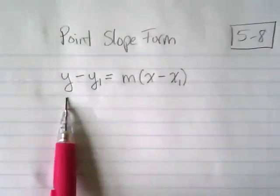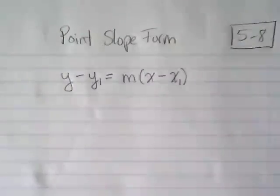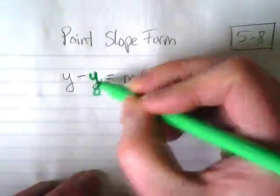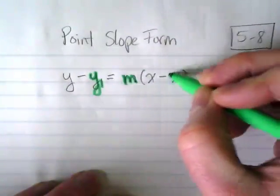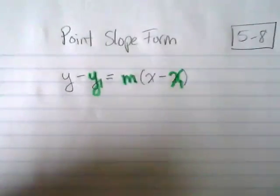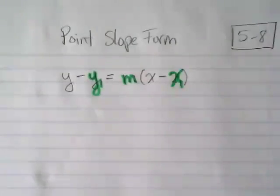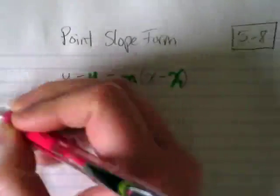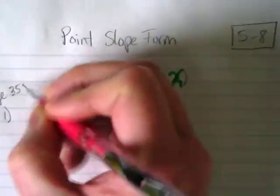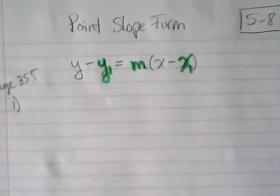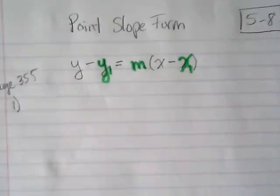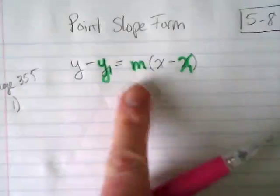When looking at this equation, three of these variables are going to turn into numbers: the Y1, the M, and the X1. The other Y and the other X stay as Y and X. So for problem number one — these problems are on page 355 in our book — it says write an equation in point-slope form for the line with the given slope that contains the given point. That's basically a long drawn-out way of saying take these numbers and plug them into this equation.